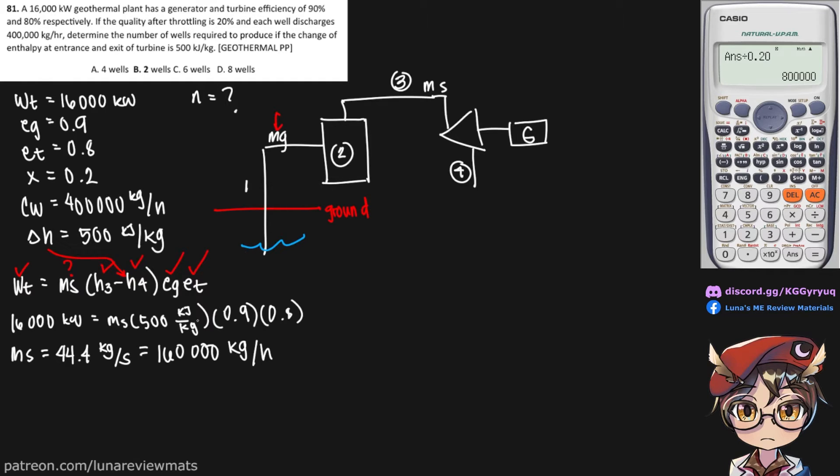This is what we're extracting from the well. So to find mg, m sub s is merely its percentage, x times m sub g. So m sub s is this one, 160,000 kilograms per hour, and x is 0.20. So in actuality, we would be getting 800,000 kilograms of groundwater per hour.